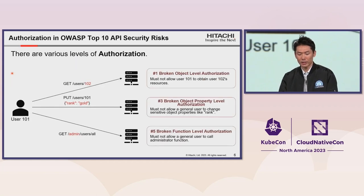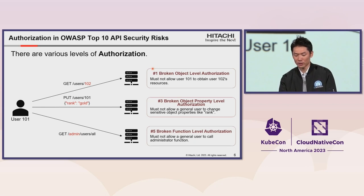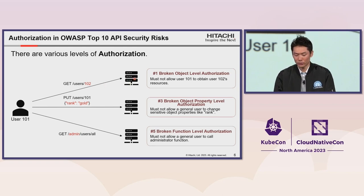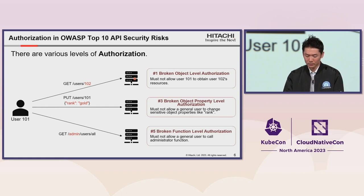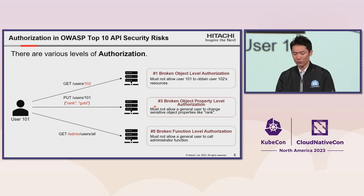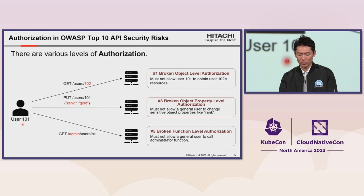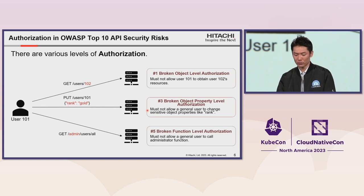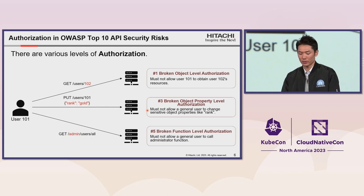I briefly explain each security risk. Regarding number one, broken object level authorization: this risk allows access to objects not permitted. For example, user 101 can get user 102's resources, which the resource server must not allow. Regarding number three, broken object property level authorization: a general user 101 can change their rank to gold rank. The resource server must not allow a general user to change sensitive object properties like rank.